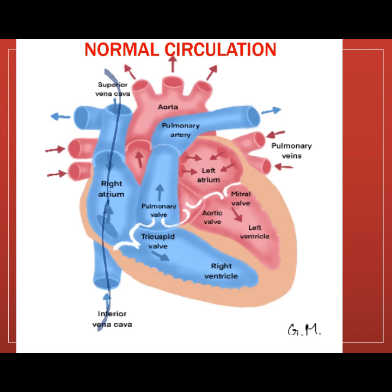Deoxygenated blood is collected from all veins of our body towards the superior vena cava from our upper body and the inferior vena cava from our lower body.